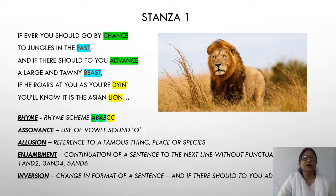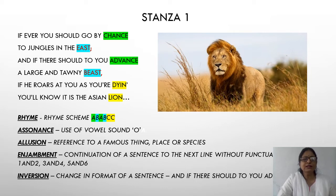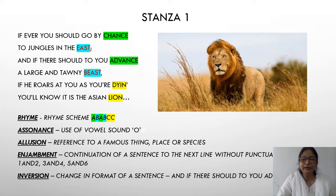The next poetic device is assonance. You are familiar with alliteration — the repetition of the same consonant sound in adjacent words. Assonance means the use of a vowel sound in nearby words. If you see, the O sound is repeating in the first line: 'should go' and 'should to you.' The O sound is repeating — not necessarily at the beginning of the words, but anywhere in the middle as well. That is assonance.